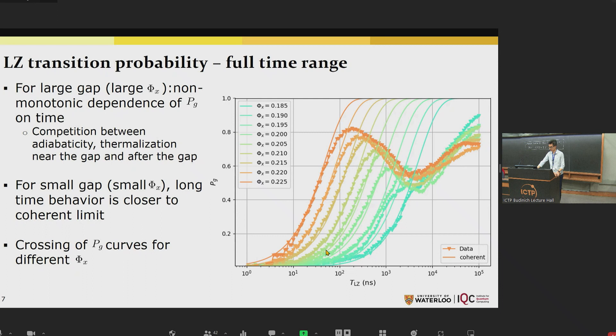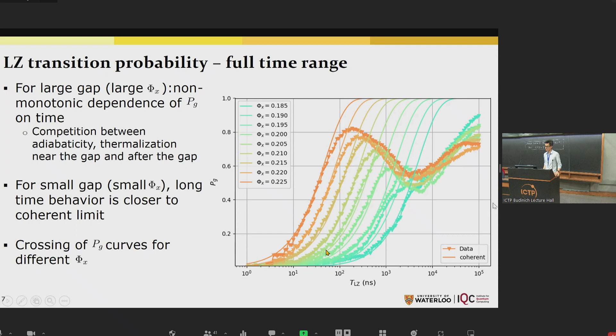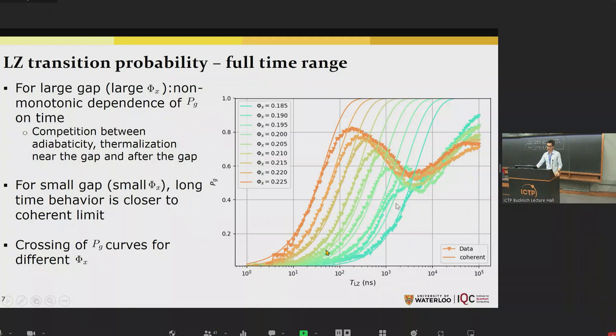However, at small gap or small phi-x, let's look at this greenish curve on the right here. We see that the behavior is quite different. P_G increases monotonically and it's quite close to the coherent limit. As a result of this, we also see that the P_G curves for different phi-x actually cross at some large sweep time. What this means is that if the sweep time is large enough, you actually get a higher ground state probability when the minimum gap is smaller. This is quite counter-intuitive.